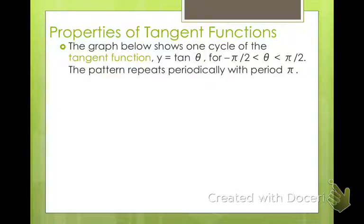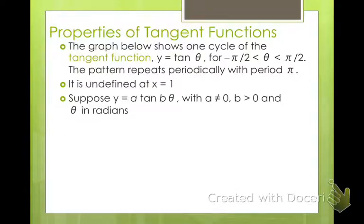So then your next one would go from π over 2 to 3π over 2. And also x is undefined at 1 because if you remember from your unit circle, cosine value is 0 at 1. So we can't have 0 in our denominator, so it's undefined. Suppose y equals a tan(bθ), where a ≠ 0, b > 0, and θ is measured in radians. This is our general form of a tangent function.